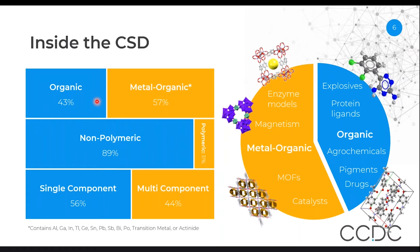So the database is quite evenly split between metal-organic compounds such as enzyme models, magnetic compounds, metal-organic frameworks, and small molecule catalysts.